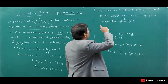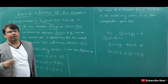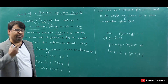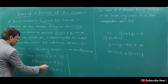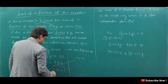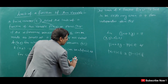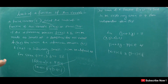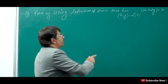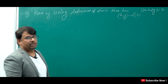The limit of the function f(x,y) is said to exist only when it is independent of the path along which (x,y) approaches (a,b). Now, by using the definition of the limit, we prove that the limit as (x,y) tends to (1,2) of 3x + 2y is equal to 7.